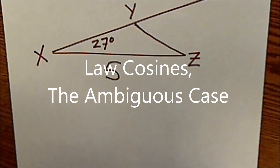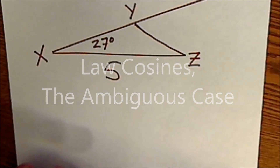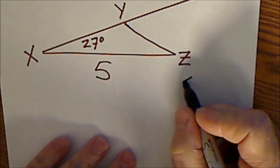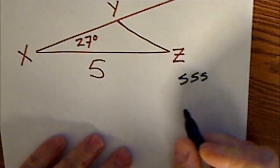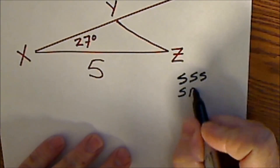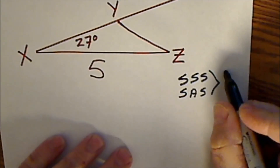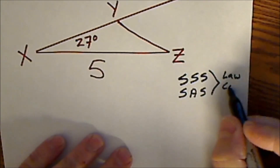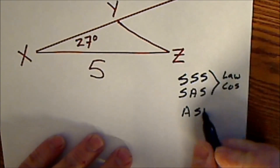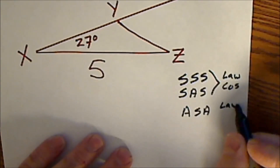This starts the next section, 5.5, the ambiguous case. So far, we've talked about proving triangles congruent with side-side-side and side-angle-side. Both these scenarios, you're going to use the law of cosines. And then if you have an angle-side-angle triangle, you're going to use the law of sines.